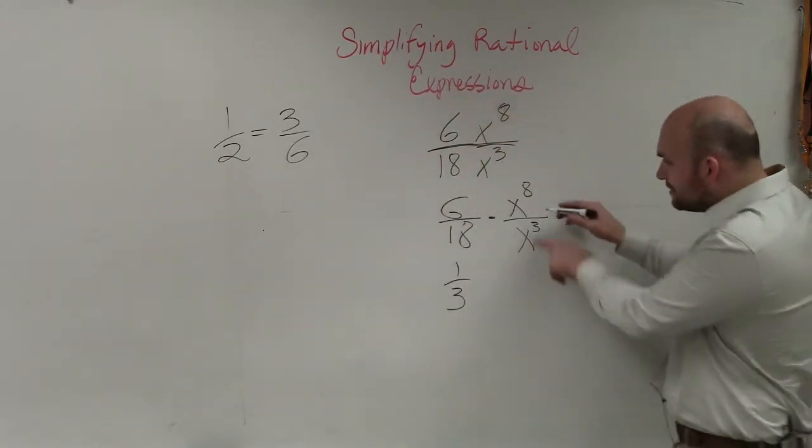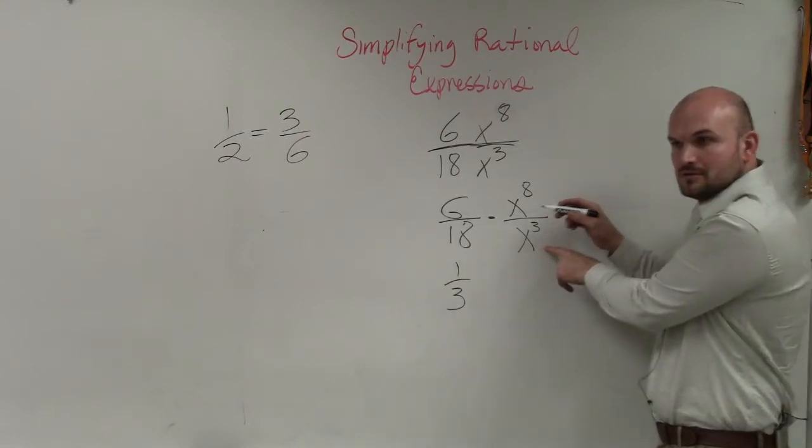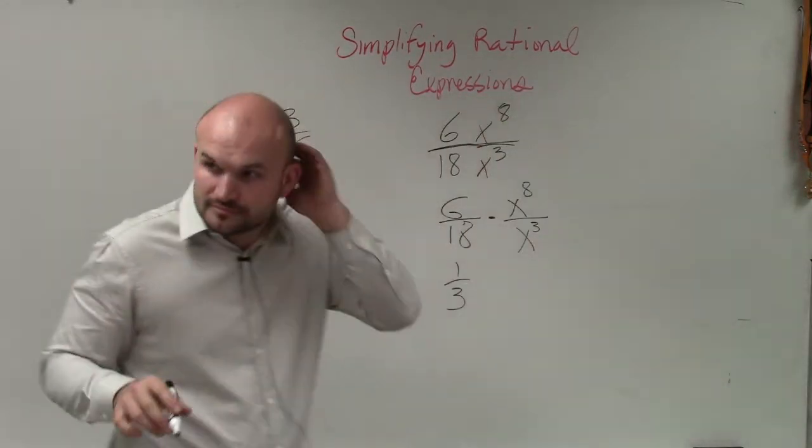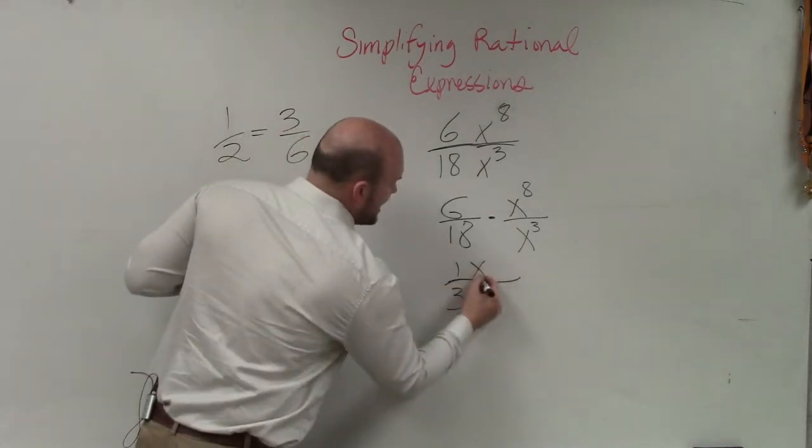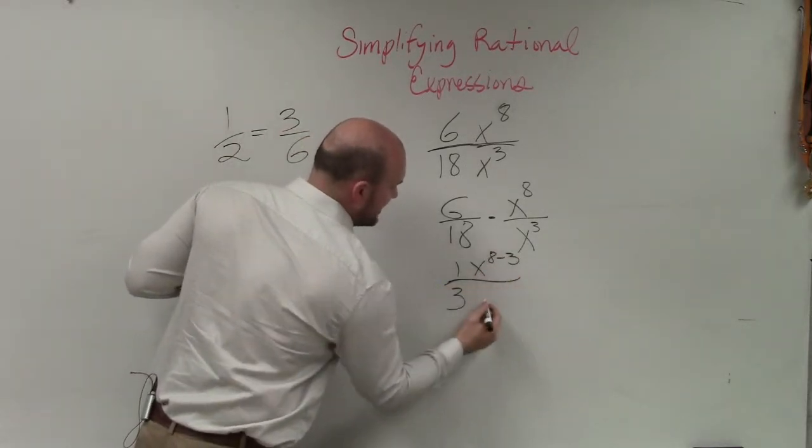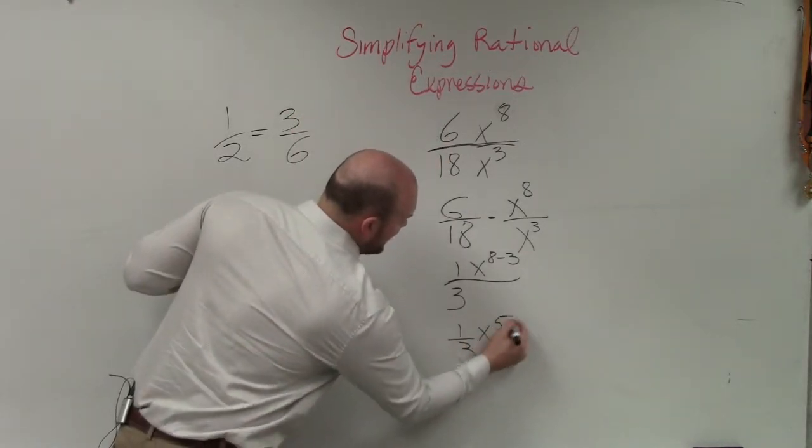Then over here, what rule of exponents are we going to use? We're going to use the quotient, right? So we're going to subtract them. So this becomes x to the 8 minus 3, which gives you 1 third times x to the fifth.